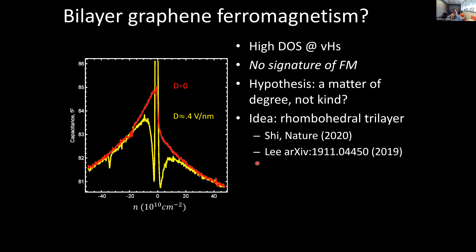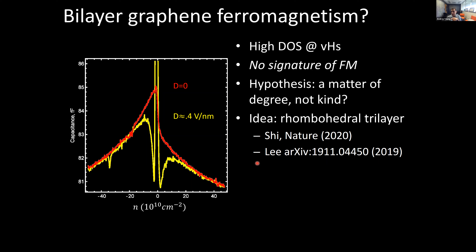The idea to address that is to study rhombohedral trilayer graphene. As you go from bilayer to trilayer to four-layer while keeping the rhombohedral structure — meaning ABC stacking rather than the conventional Bernal ABA stacking — all of these effects should get larger. Rather than having a P-to-the-fourth dispersion, you would get a P-to-the-sixth dispersion and therefore a stronger divergence. If you go to four layers, you'll get P-to-the-eighth, making that Van Hove singularity stronger and stronger, giving a higher density of states.